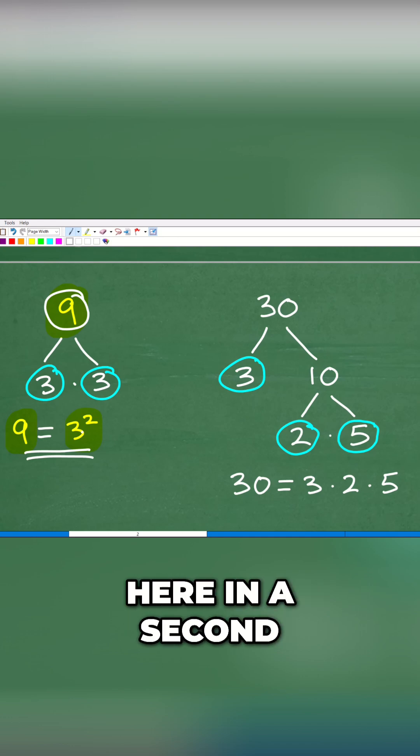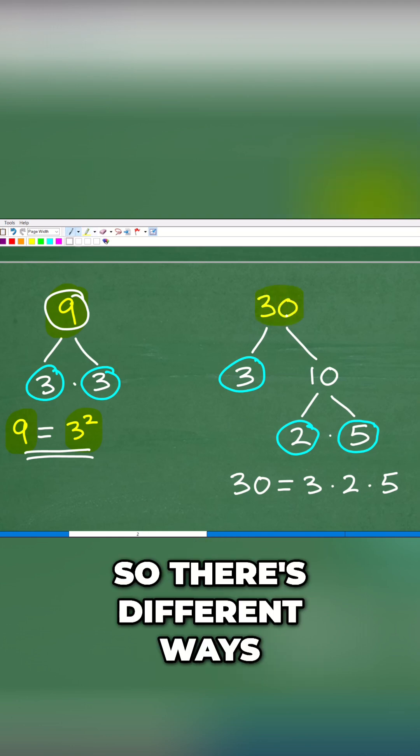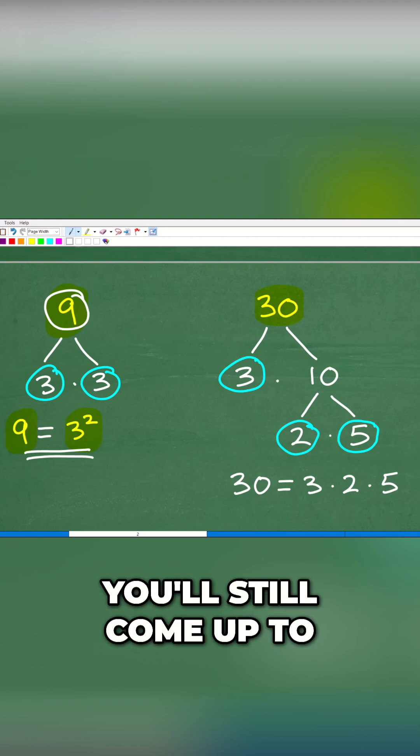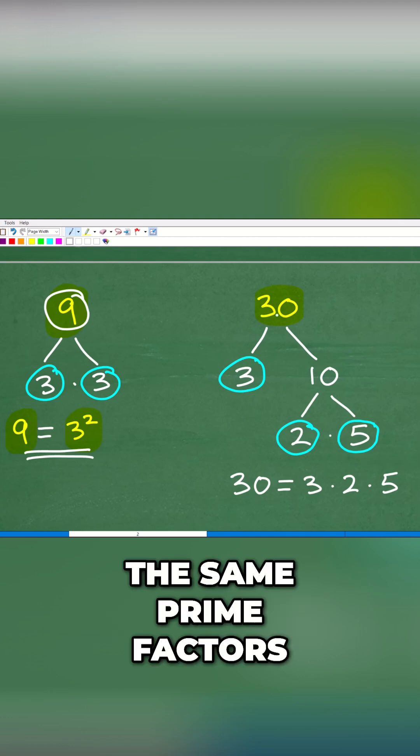Hopefully this makes sense to you and you understand how to factor. So let's go ahead and factor 30. There's different ways we could factor—6 and 5, 2 and 15. You'll still come up to the same prime factors. So I'm going to say 3 times 10 is 30.